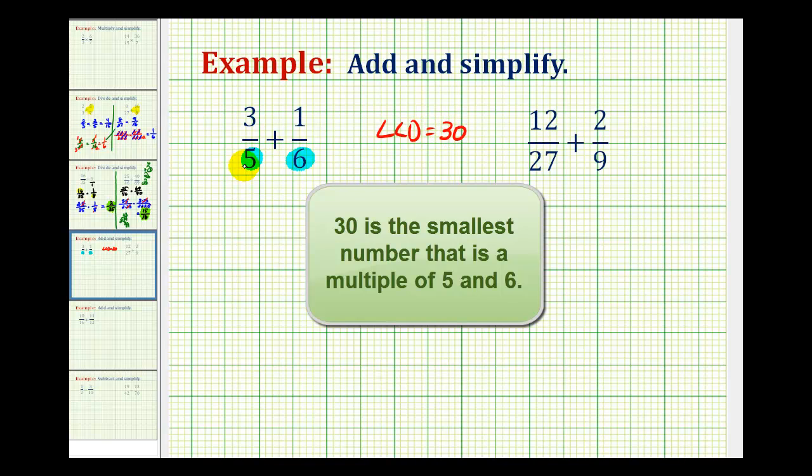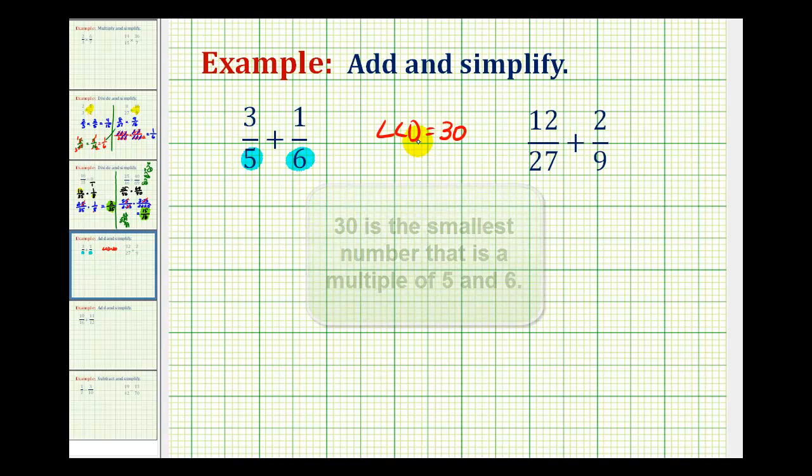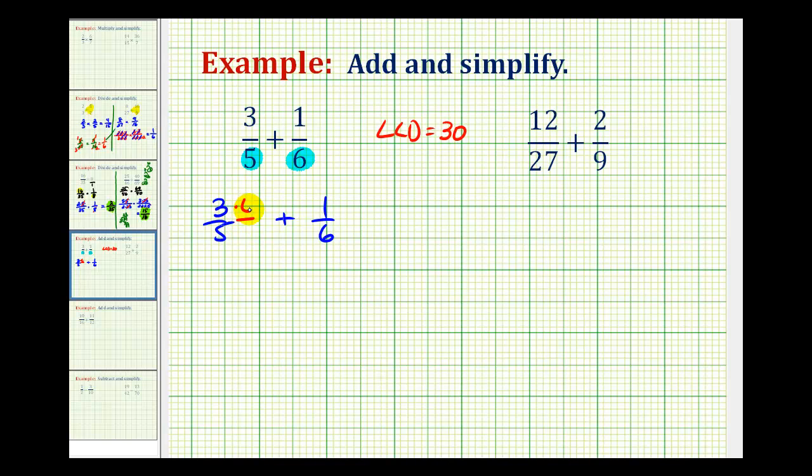So we need to rewrite each of these fractions with a denominator of 30. We have to multiply the numerator and denominator of 3 fifths by 6 and multiply the numerator and denominator of 1 sixth by 5.